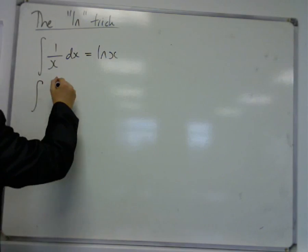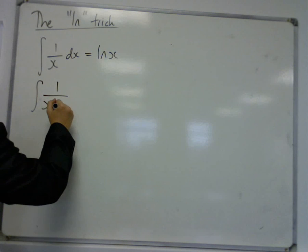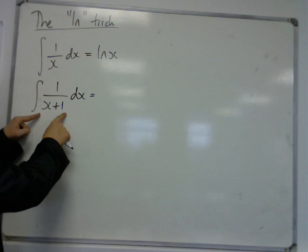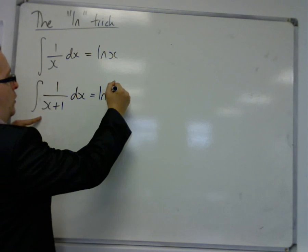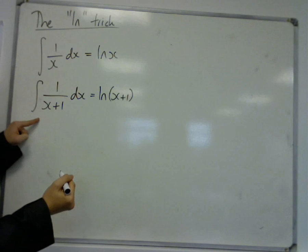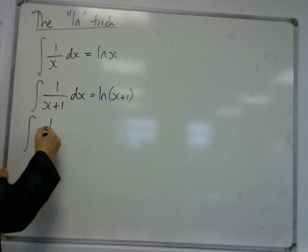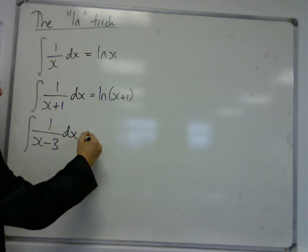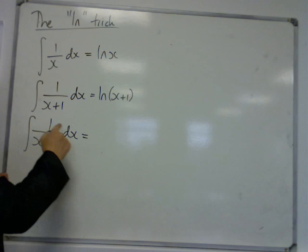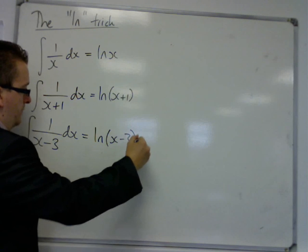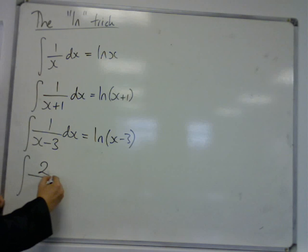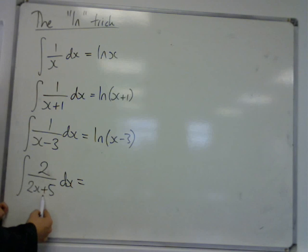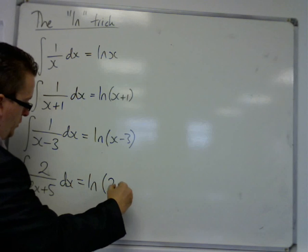In the same way, if I had the integral of 1 over (x + 1) dx, the derivative of what's on the bottom is 1, which is on the top, and this would be log of (x + 1). And then I could have 1 over (x − 3) dx — the derivative of what's on the bottom is on the top, so that's log of (x − 3). Then if I had 2 over (2x + 5) dx, the derivative of what's on the bottom is 2, which is on the top, so this is log of (2x + 5).